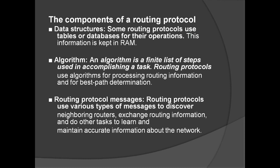What are the components of a routing protocol? First is data structures — some routing protocols use tables or databases for their operations. The routing table is stored in the router's RAM, just like a computer holds information in memory. Next is algorithm — an algorithm is a finite list of steps used to accomplish a task. Routing protocols use algorithms for processing routing information and for best path determination, depending on what routing protocol is used.